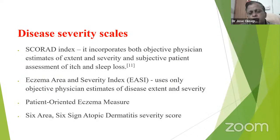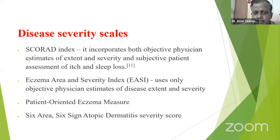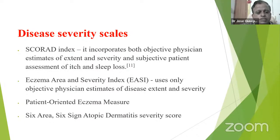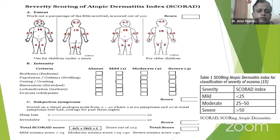Once clinical features and diagnostic criteria are established, you should assess the severity of Atopic Dermatitis. The SCORAD index is one tool, incorporating both objective physician estimates of extent and severity, and subjective symptoms such as itching and sleep loss. You can also use the Eczema Area and Severity Index (EASI), patient-oriented eczema measures, or six-area six-sign Atopic Dermatitis (SASSAD) severity score. The SCORAD index is the most simple method.